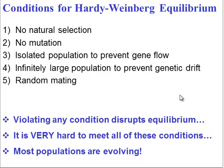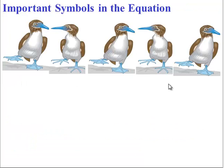So now, let's take a look at the equation that can help us figure out if populations are in equilibrium or evolving. To start, we're going to identify the symbols in the equation. And we're going to use this population of blue-footed boobies to help us.